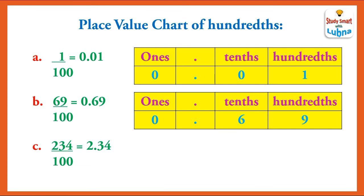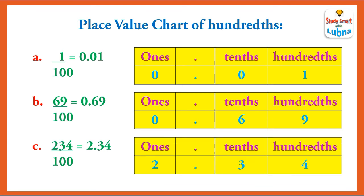234 divided by 100 equals 2.34. The place value of 2 is ones, then a decimal point, the place value of 3 is tenths, and the place value of 4 is hundredths.